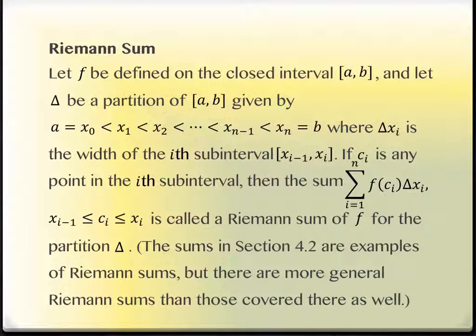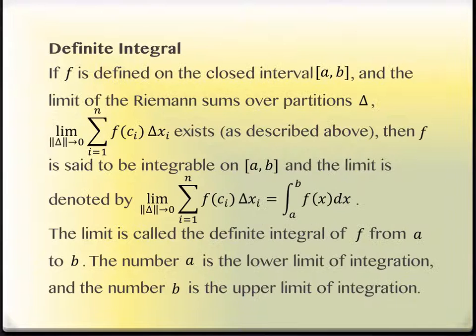Now what we're going to do with this is the next slide, called a definite integral. So this f is defined on a closed interval a, b, and the limit of the Riemann sums over the partitions. So the limit of the deltas are going to zero. In other words, those widths are going to get infinitely small.